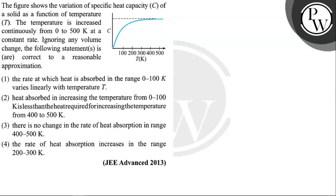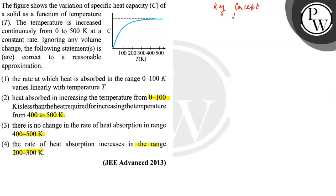The volume statement is correct to a reasonable approximation. Option 1: rate at which heat is absorbed in the range 0 to 100 Kelvin varies linearly with temperature T. Option 2: heat absorbed in increasing temperature from 0 to 100 Kelvin is less than heat required for increasing the temperature from 400 to 500 Kelvin. Option 3: there is no change in the rate of heat absorption in the range 400 to 500 Kelvin. Option 4: rate of heat absorption increases in the range 200 to 300 Kelvin. The key concept is calorimetry.